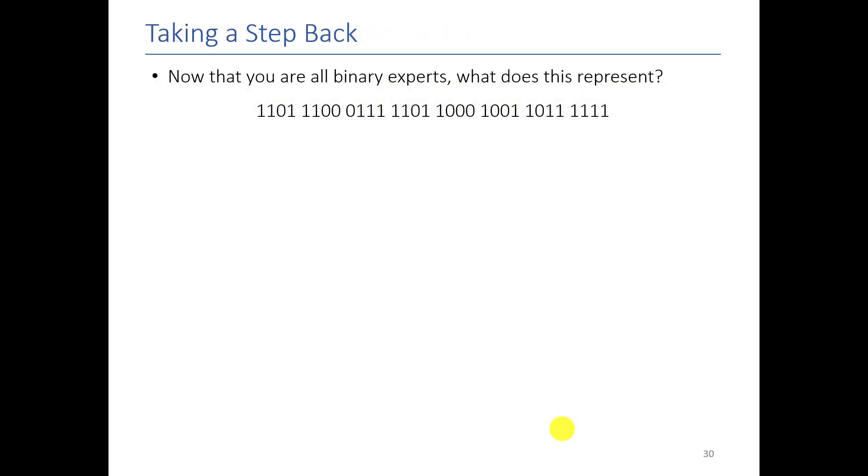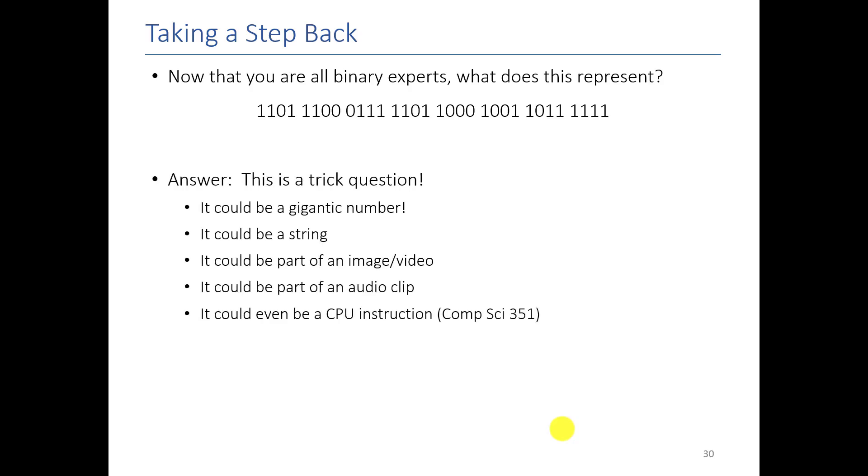All right. So now that you've been through multiple videos that talk about how to use binary and how to encode things, you should be able to look at this and tell me what does this binary represent. And hopefully you don't need a few seconds to think about it because it really is a trick question, right? This could be a number. It could be a string. It could be an image, a video. It could be an audio clip. It could be anything. The important thing to remember is that we have the ability to convert any discrete thing into binary. But before the computer can do anything meaningful with it, we have to tell it what it is before we can correctly interpret it.